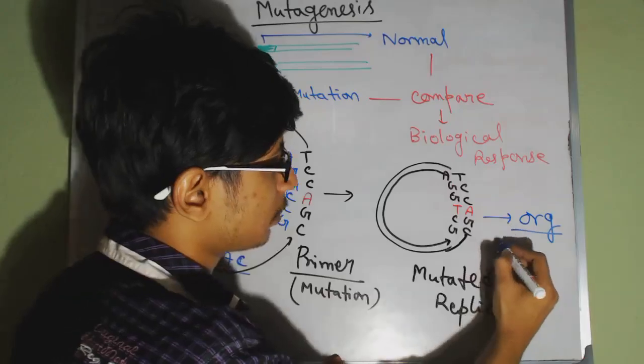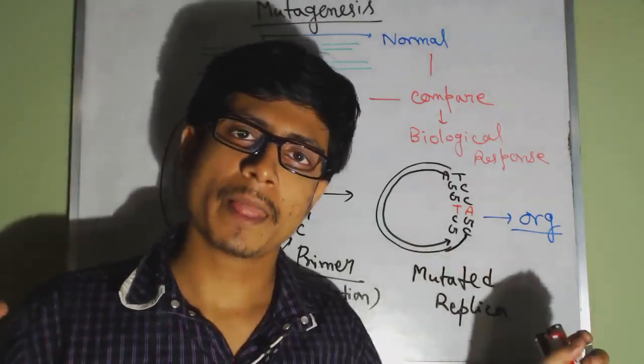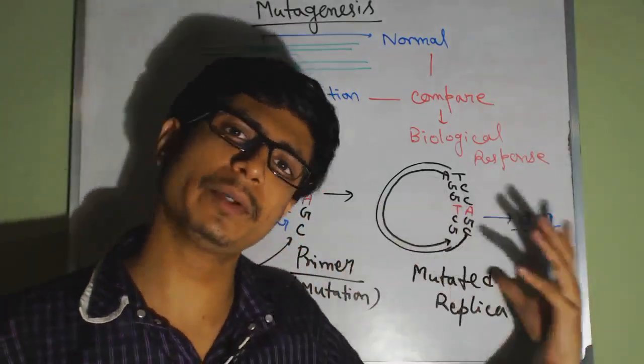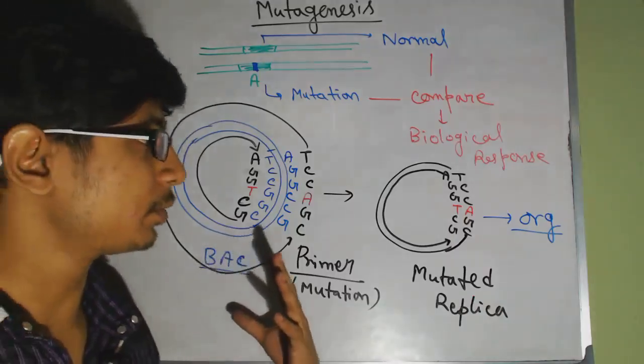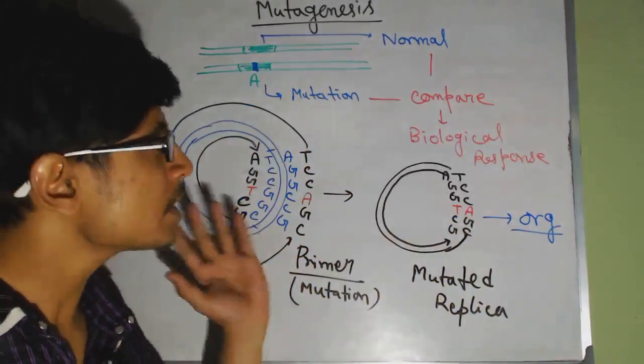This transfer is known as transformation, that is transferring of genetic material directly to the organism. Either if we look for bacteria, we do it for bacteria. If you look for eukaryotic cells, we need to use a different approach, and obviously we select a different vector there.